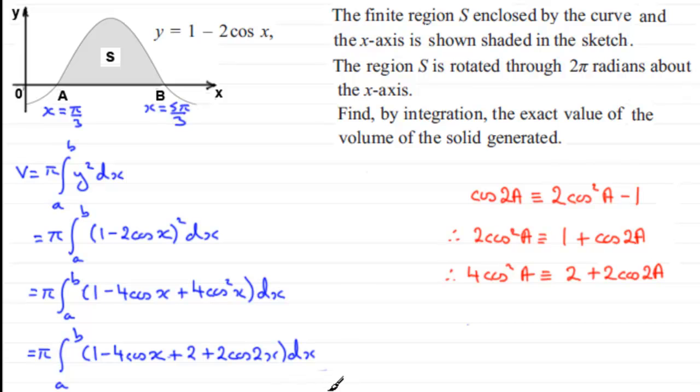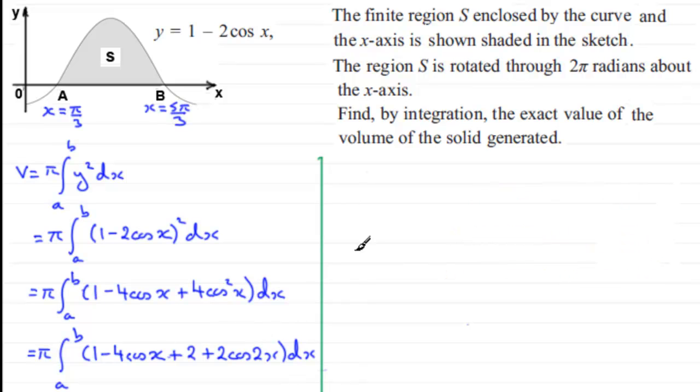We just need to work at integrating these separate terms now. If I now integrate each of these terms, we've got the volume v equals pi. The integral of 1 with respect to x is just x. The integral of minus 4 cos x with respect to x is minus 4 sin x. The integral of 2 with respect to x is 2x. And the integral of 2 cos 2x with respect to x is simply plus sin 2x.